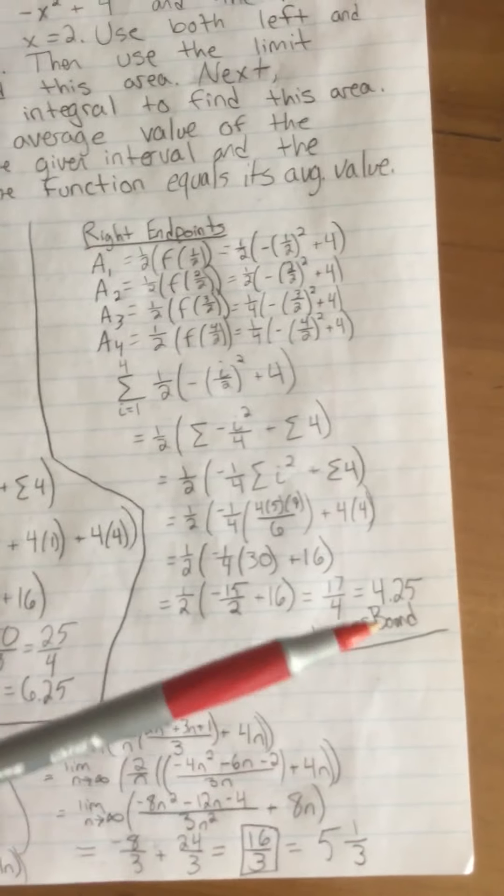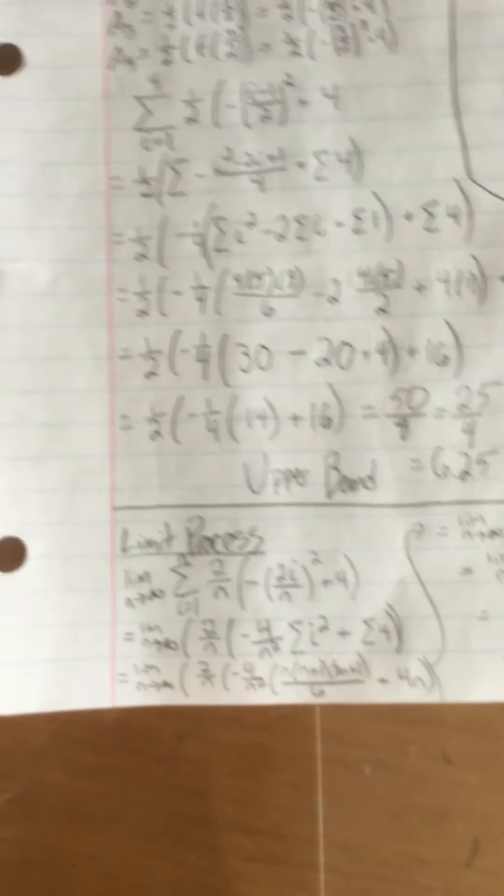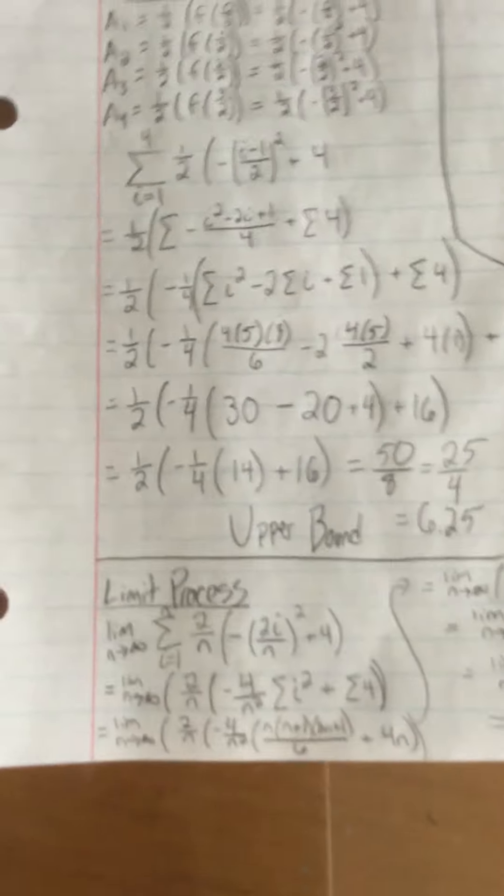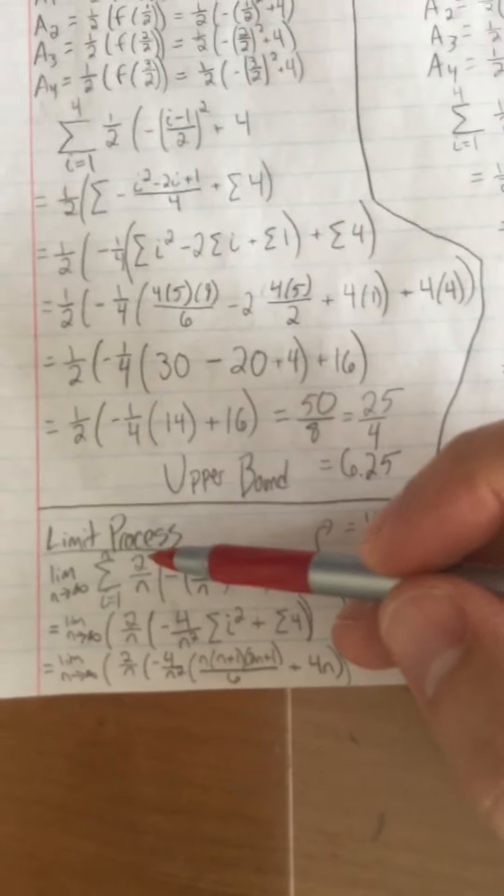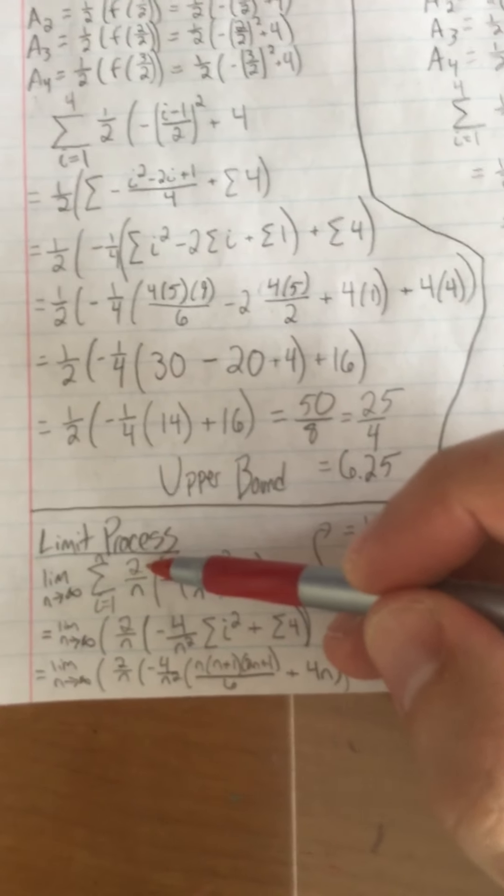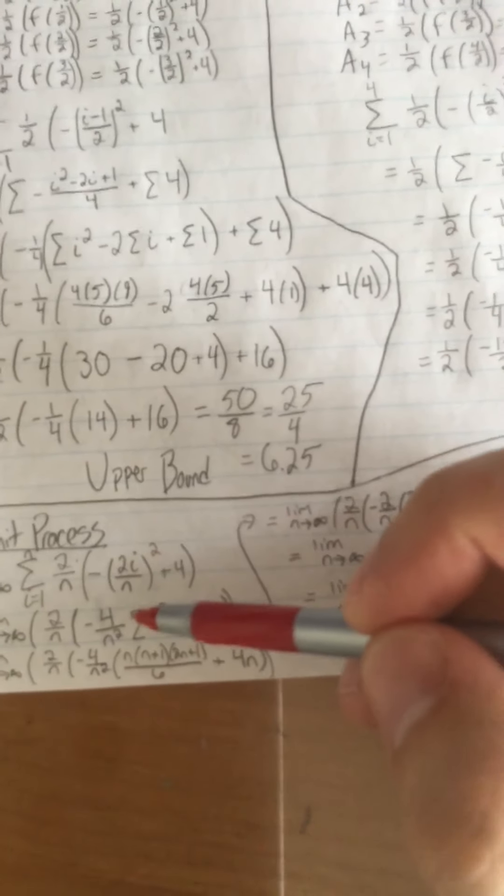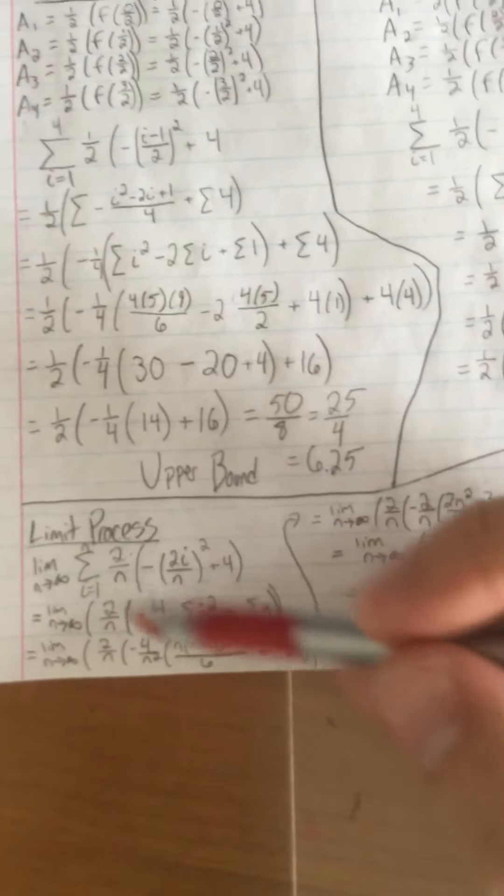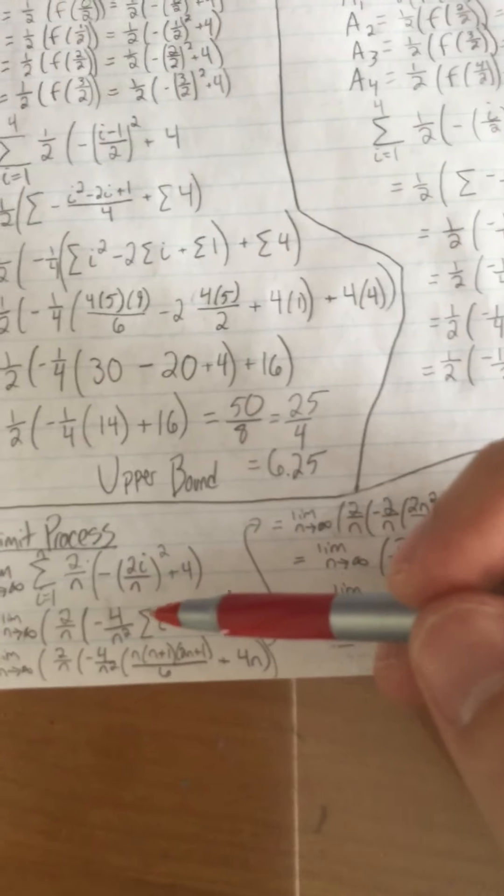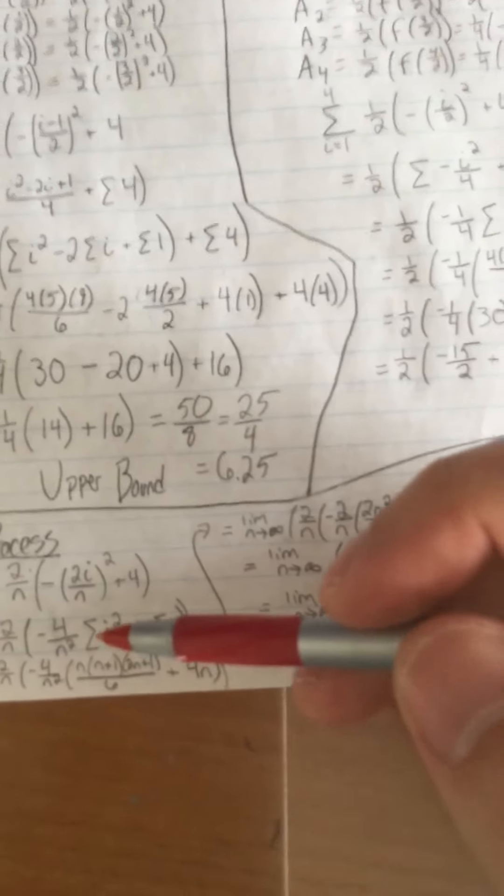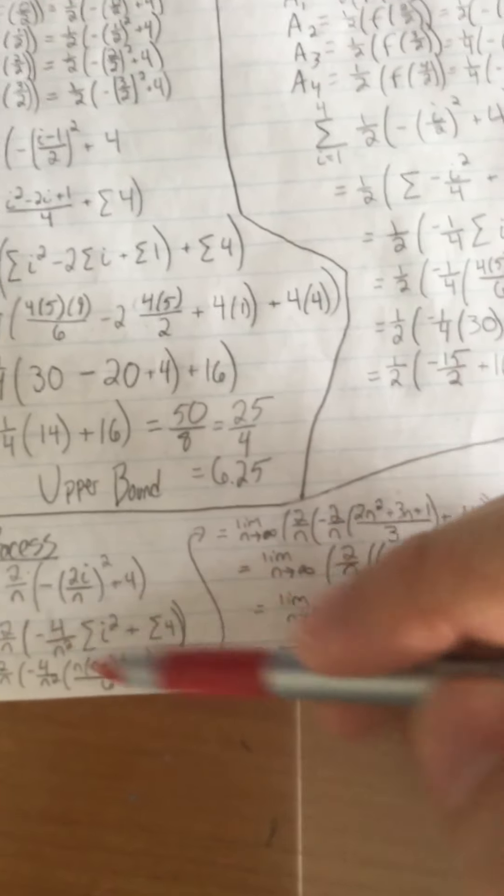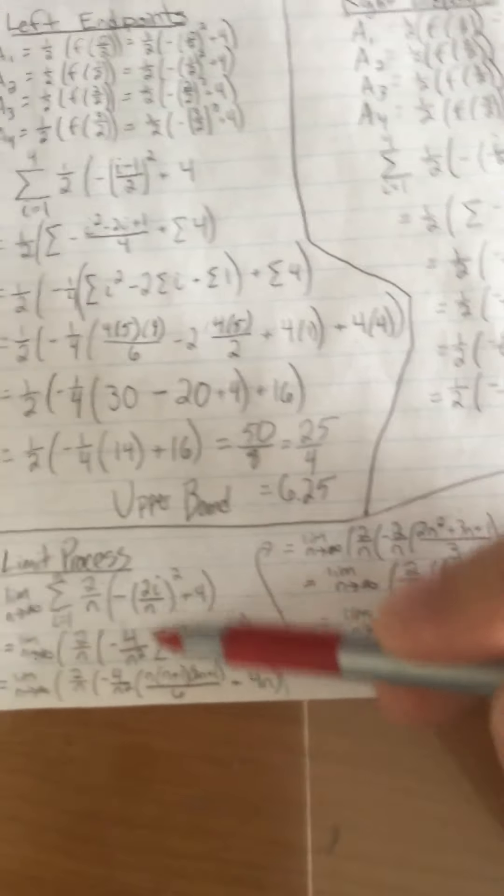Then here I did the limit process. Before we went home, we did this as b minus a over n, and then f of b minus a times i over n. Okay, so that's where I got this from. That equation you should have that written down. I think I wrote it on the board maybe three or four straight days. That's to help us come up with this equation for our limit process.